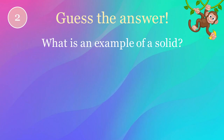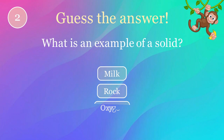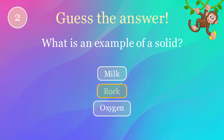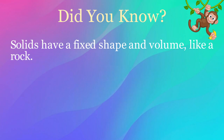What is an example of a solid? Options: milk, rock, oxygen. The correct answer is rock. Here's an interesting fact: solids have a fixed shape and volume, like a rock.